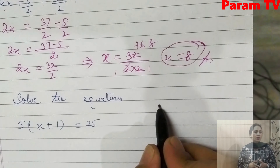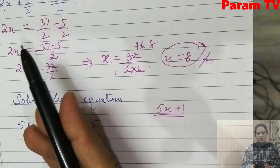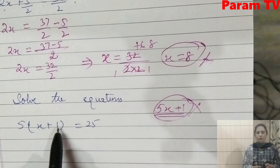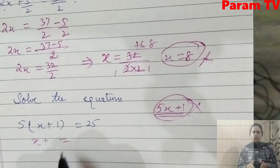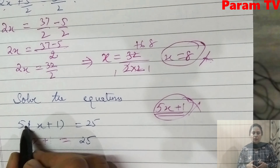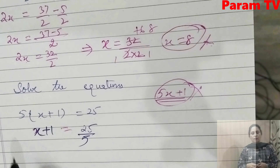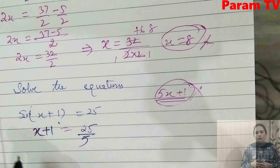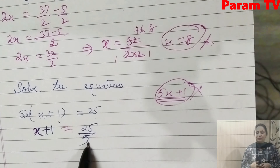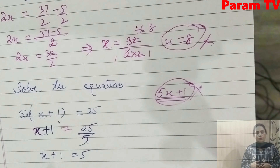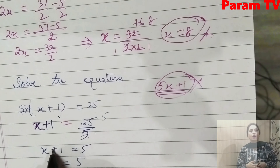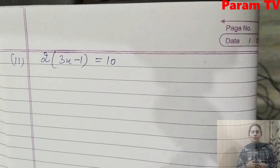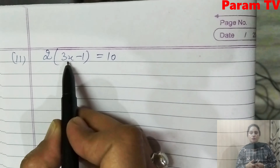Question number 2 — again solve the equations. First part: 5(x + 1) = 25. Now see, students — here it is not just 5x; there is a bracket. Bracket means 5 is multiplied into all the terms inside. So we can divide both sides by 5: x + 1 = 25/5 = 5. Then x = 5 - 1 = 4. So x = 4 is the answer.